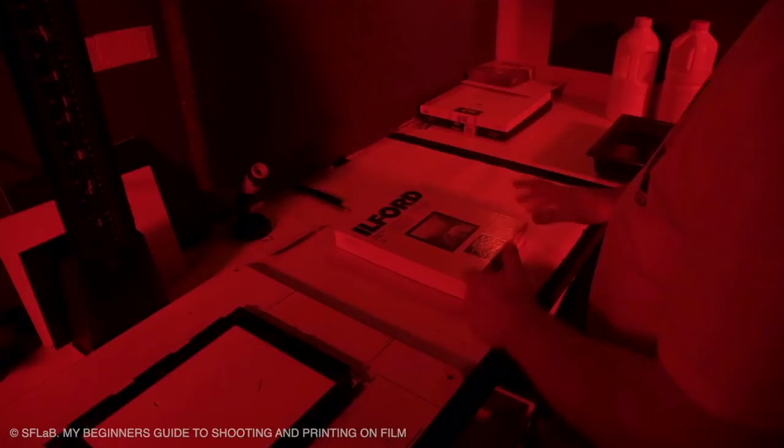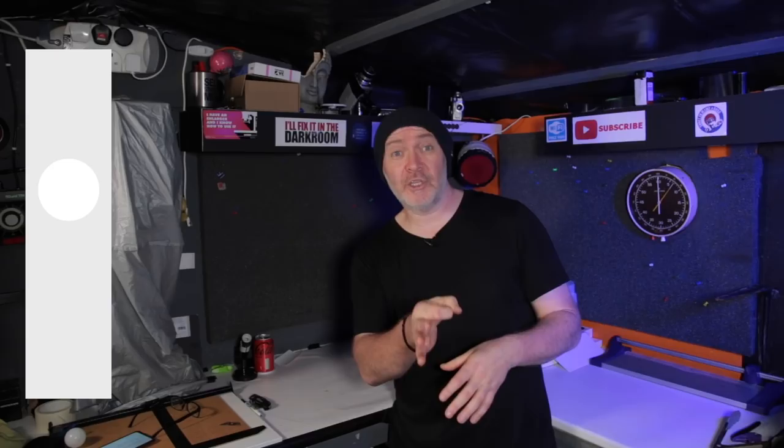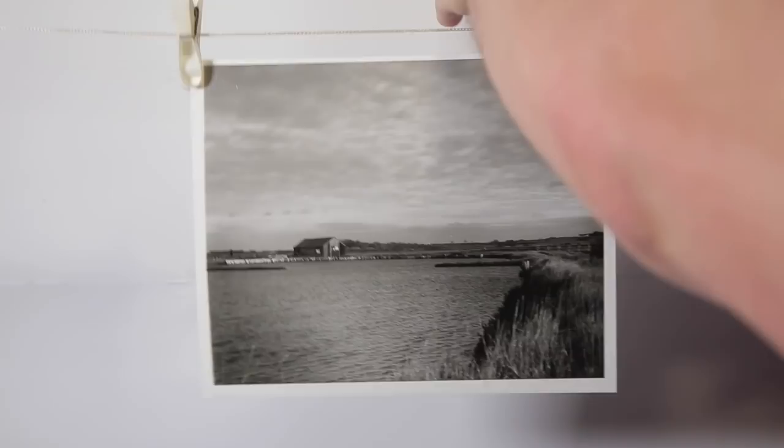One test you can do to make sure your red light is safe: turn all the lights off in your darkroom, put a small test strip down and place a small coin on top. Turn your red light on, let that go for two minutes, then turn it off, develop, stop, and fix. If you can see the coin image on the paper, your red lights aren't safe. You need to either look at a new design of red light, dim them down slightly, or move them away from the paper.